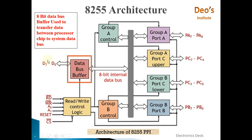The data bus buffer has input from D0 to D7. This data bus is bidirectional, meaning the processor can read from or write to this data bus. Data read from this pin will be stored in the buffer, which is internally connected to the internal data bus of 8255.